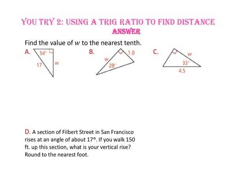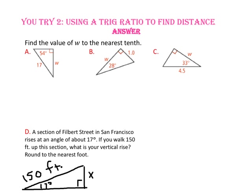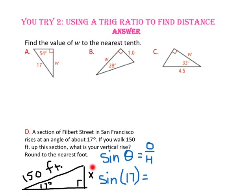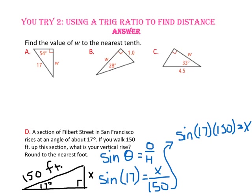For part D, it'll be helpful if we draw a picture. A section of Filbert Street in San Francisco rises at an angle of about 17 degrees. If you walk 150 feet up this section, what is your vertical rise? Since we're looking for the side opposite our 17-degree angle and we know the hypotenuse, let's use the sine ratio. Substitute 17 degrees in for theta, X in for the opposite side, and 150 in for the hypotenuse. Since X is in the numerator, we multiply sine 17 times 150, and rounding to the nearest foot, our vertical rise is approximately 44 feet.